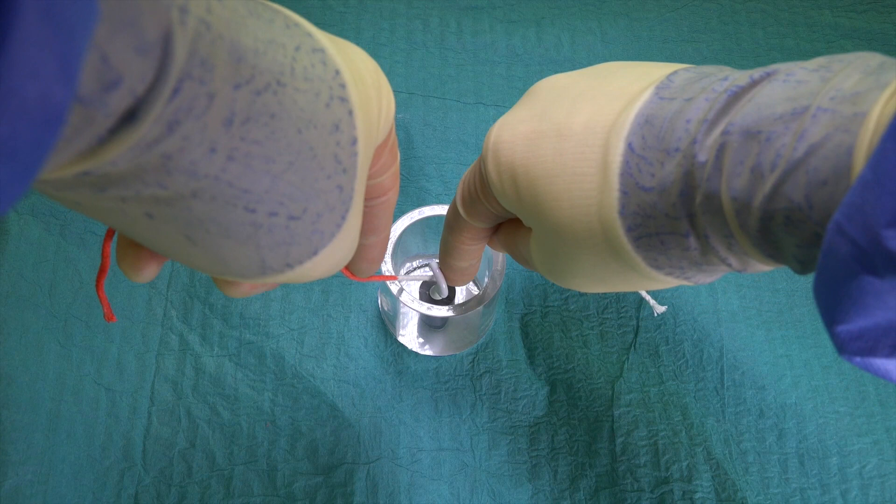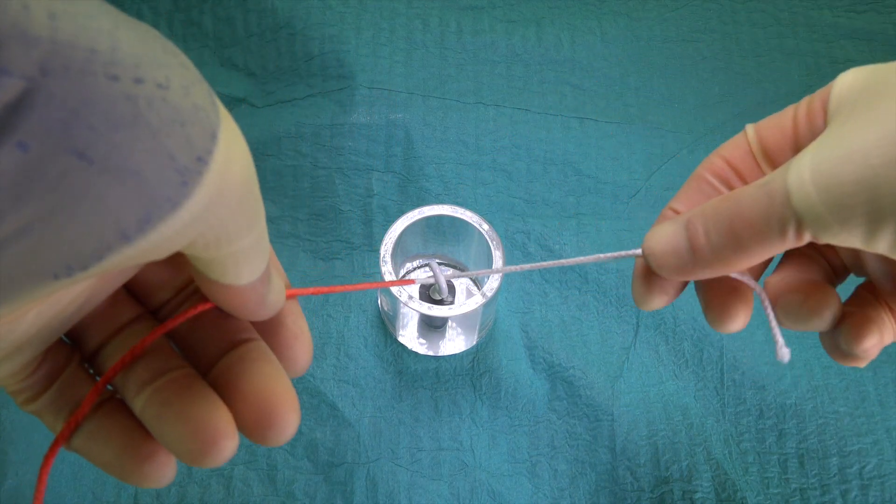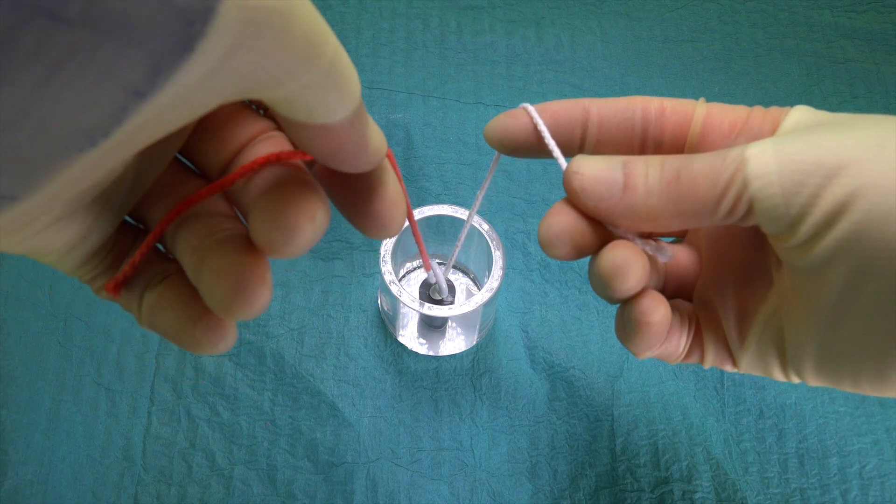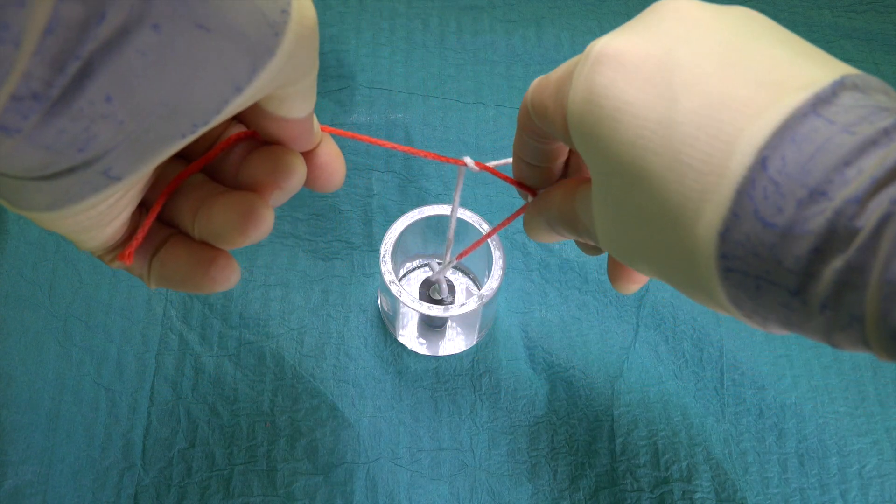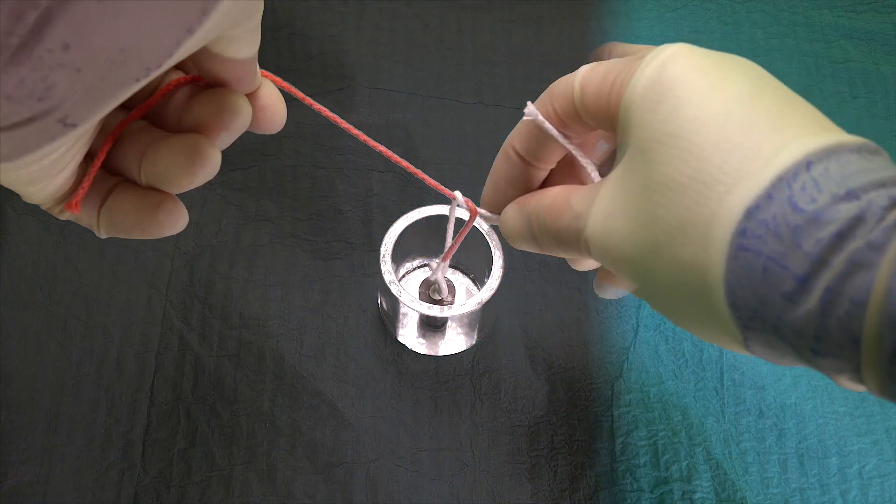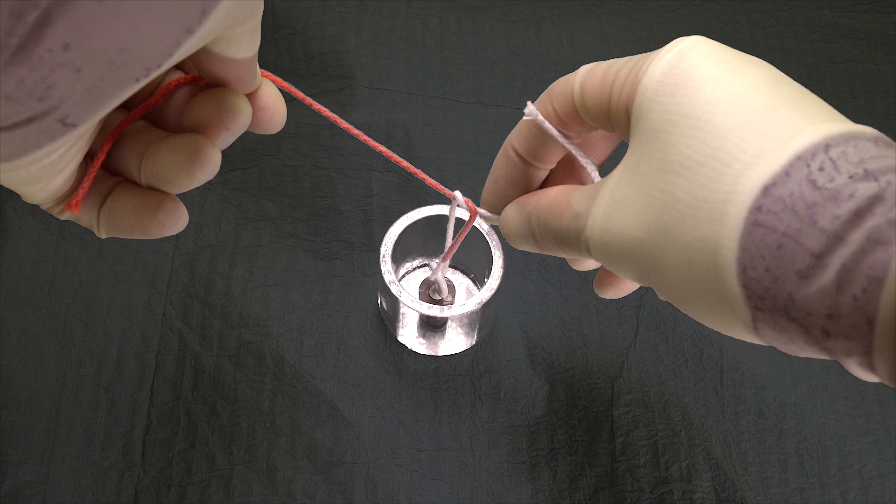Now looking at tying at depth with our right hand. As we've already mentioned, the hand actions in performing the knot are the same as when we perform a standard reef knot. But the key difference is in maintaining the upward tension with our left hand, as the right hand snugs down each of the throws.